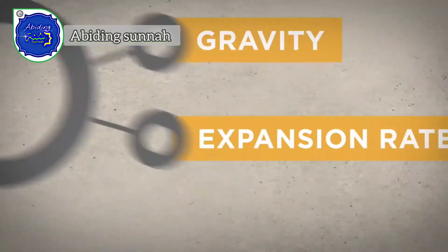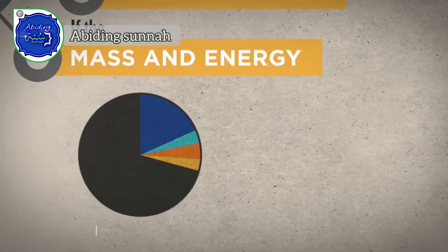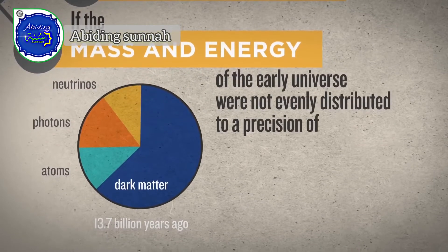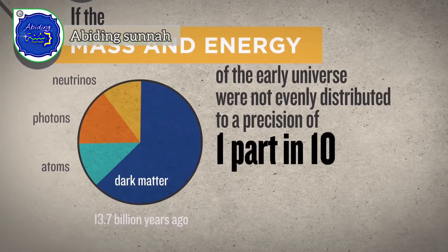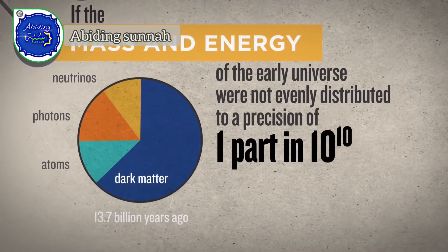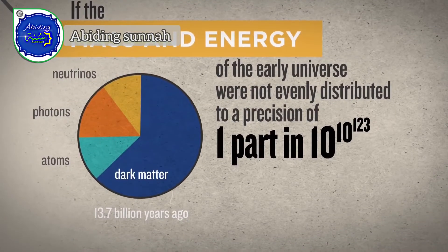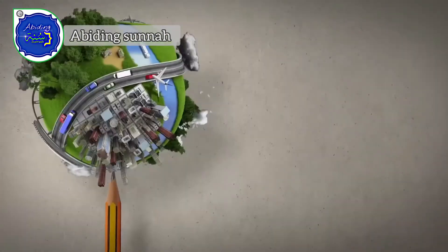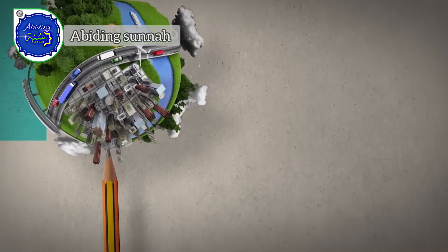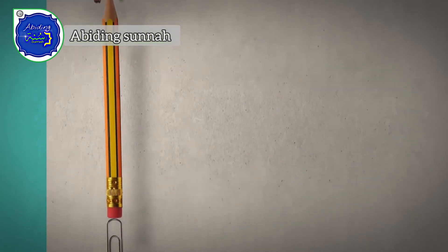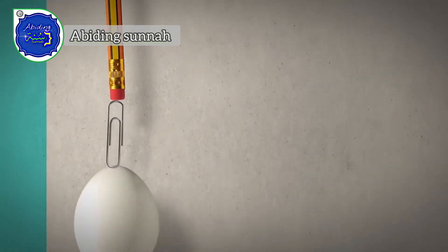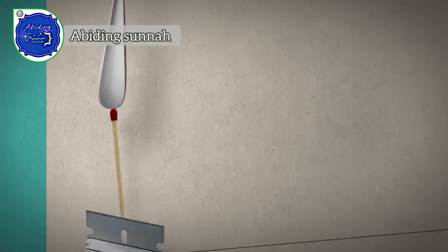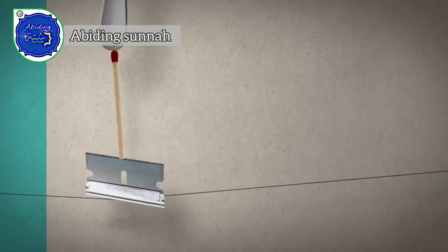Another example of fine-tuning: if the mass and energy of the early universe were not evenly distributed to an incomprehensible precision of one part in 10 to the 10 to the 123rd, the universe would be hostile to life of any kind. The fact is, our universe permits physical, interactive life only because these and many other numbers have been independently and exquisitely balanced on a razor's edge.